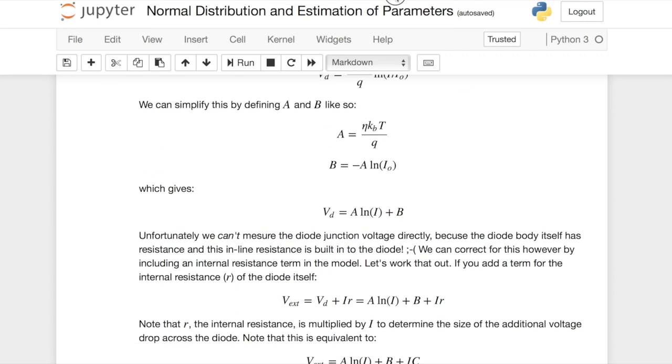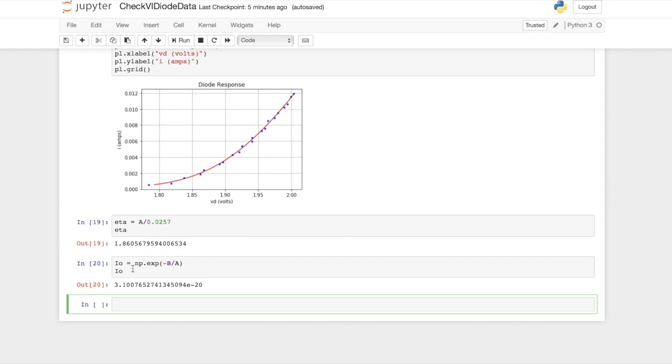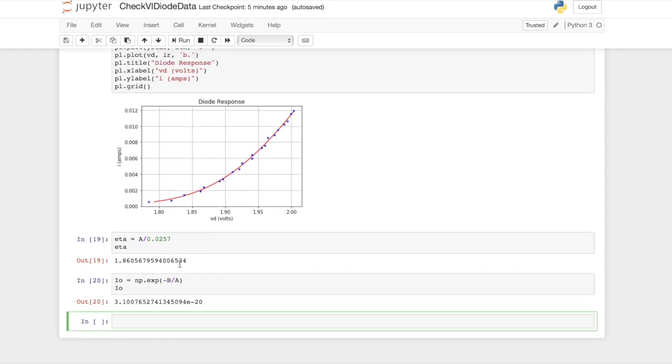Okay, so that's the idea. The point is you can get eta, you can get I0 from the parameters of the fit. All right, we'll see you guys next time.